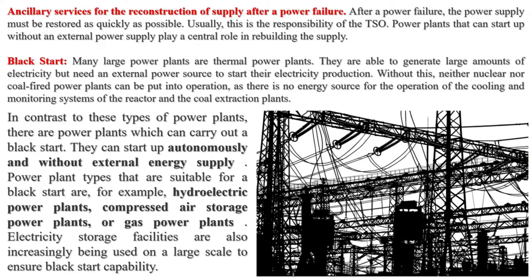Efficient Consumption Systems consist of at least one generation unit and a consumption unit directly connected with each other through a private network, without third-party access, and directly or indirectly connected to the public grid.